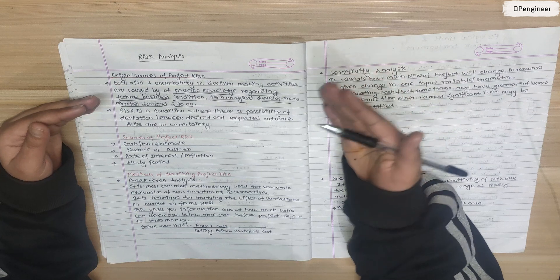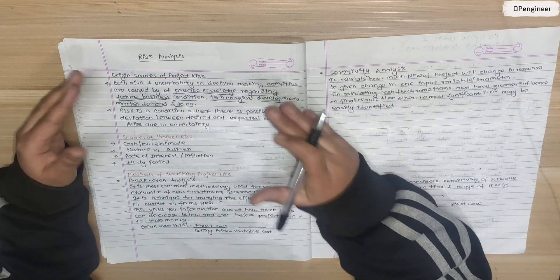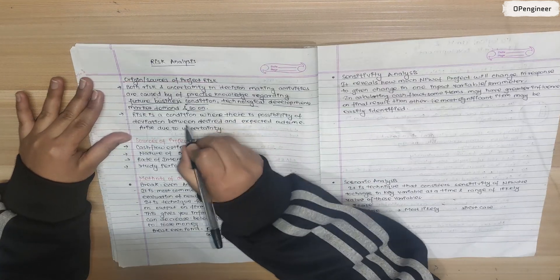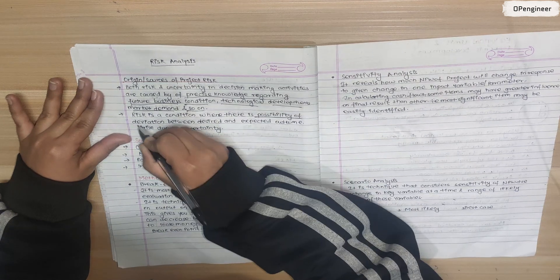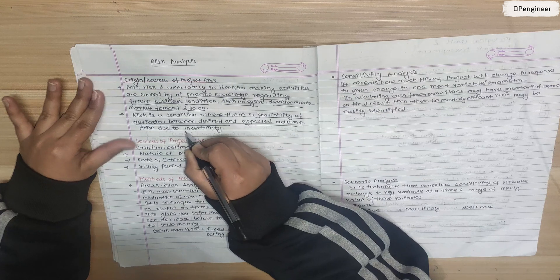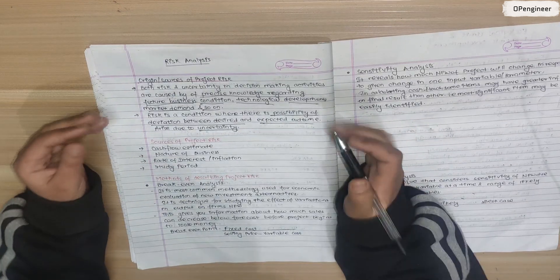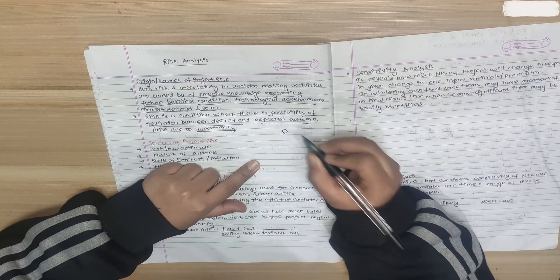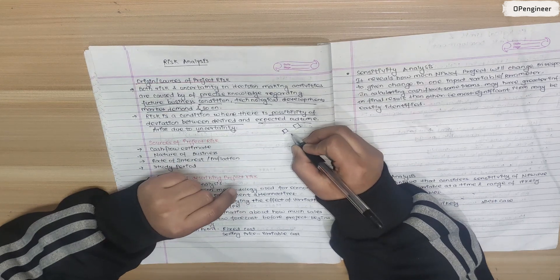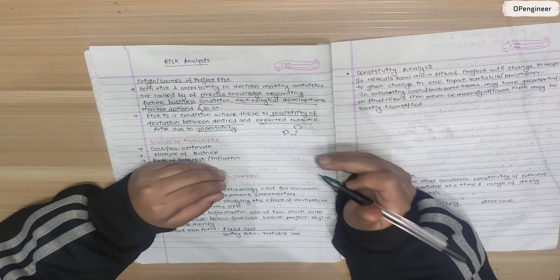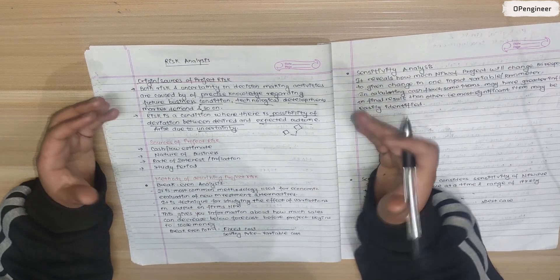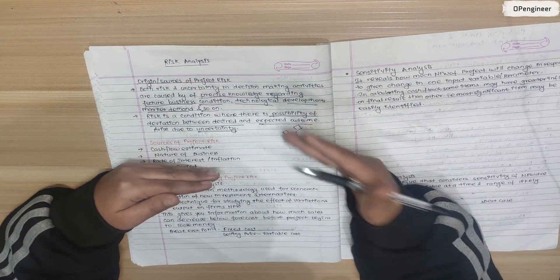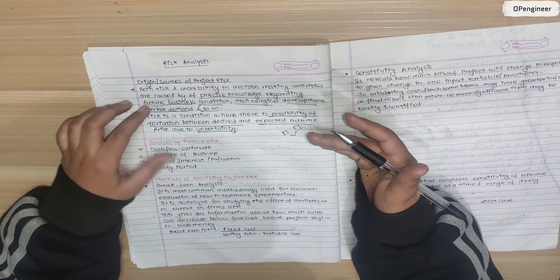Future business effects, technology development and market demand also affect this. Risk is defined as a condition where there is a possibility of deviation between desired and expected outcome arising due to uncertainty. Risk is a condition where there is deviation - when we expect one amount but receive a different amount. When I start a project, I want my outcome to be greater than my investment, but if there is deviation, there is risk in that project.